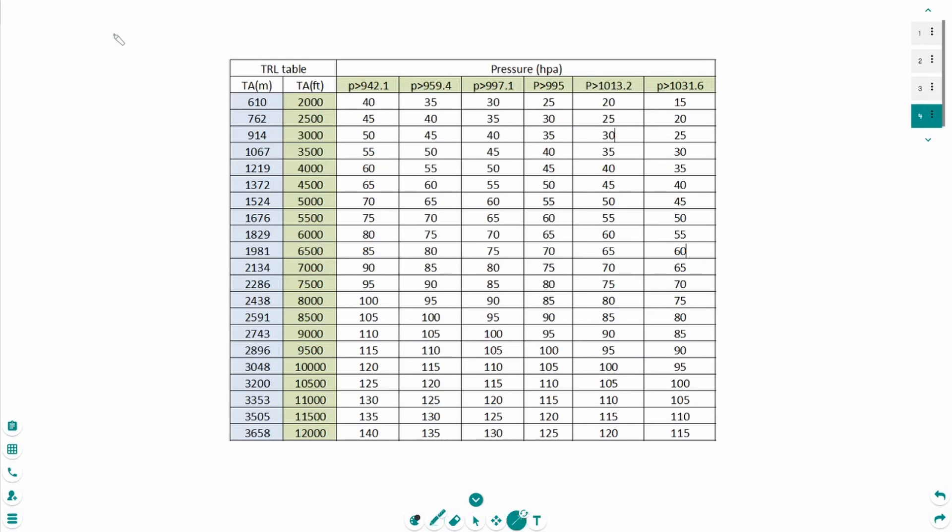At the right, you can see the transition altitude in feet and in meters. And at the top, you can see the pressure in hectopascal. So, our QNH was 1019. And 1019 is above 1013 and below 10131. So, we need to use this column. And our transition altitude was 4000. So, we need to use this column.